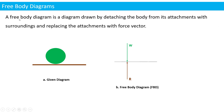To define once more: a free body diagram is a diagram drawn by detaching the body from its attachments with surroundings and replacing the attachments with force vectors. In simple words, the diagram should consist of only the magnitude, direction, and position of the forces.